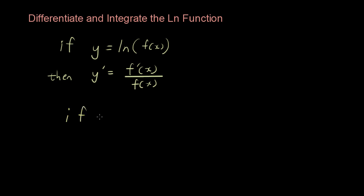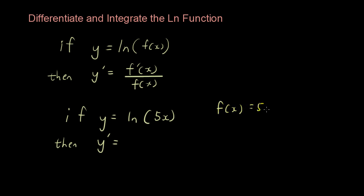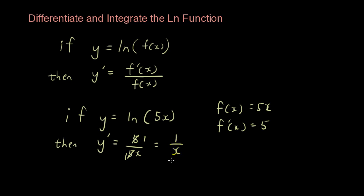If y is equal to ln(5x) and we want to differentiate it, then y' would be equal to: the inside of the function f(x) is 5x, and f'(x) — how do we differentiate that? Following the derivative rule, you get 5. So the answer is f'(x) which is 5, divided by f(x) which is 5x. Simplifying, 5 divided by 5 is 1, so you get 1 over x. That is the derivative of ln(5x).